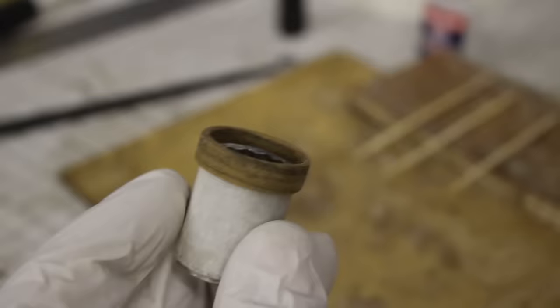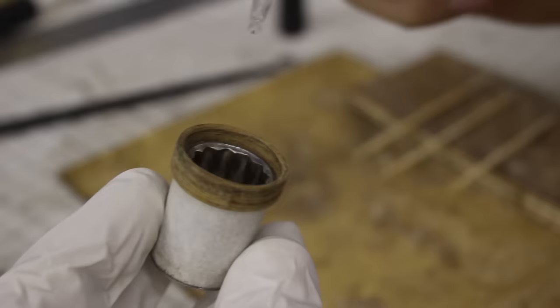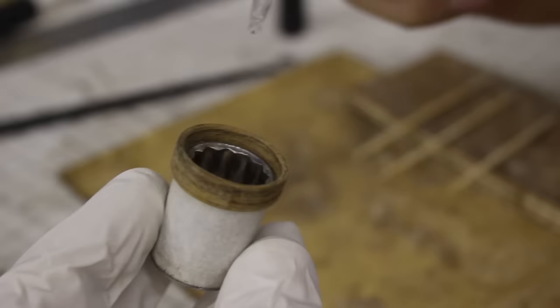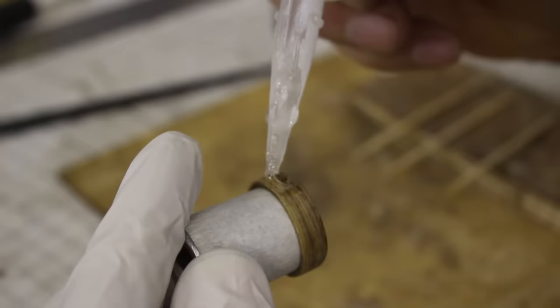To finish the ring I used the CA glue or super glue finish using the Loctite super glue. I chose the CA finish because it's durable, it enhances the aesthetics of the wood grain and it doesn't require any special tools to polish.